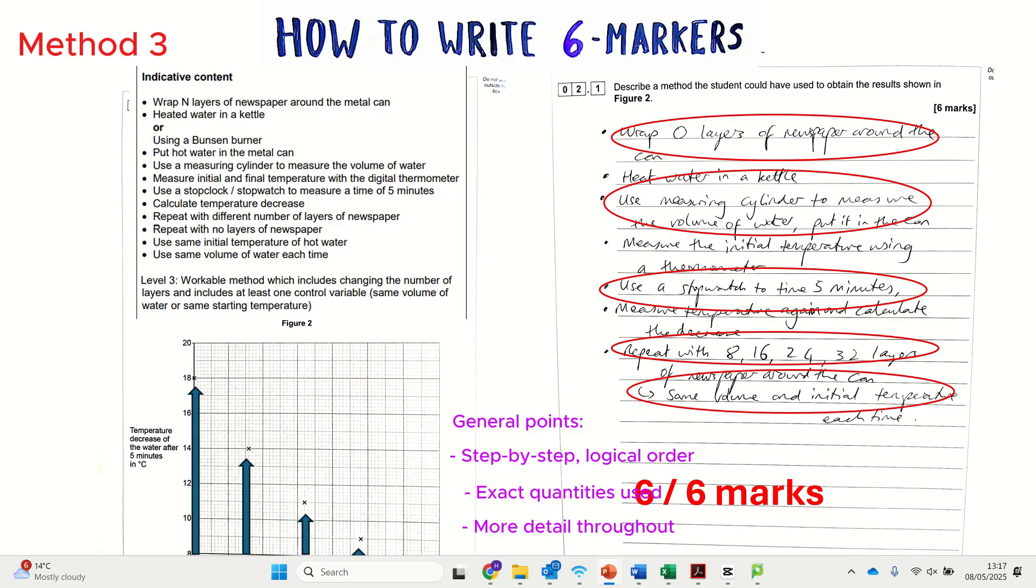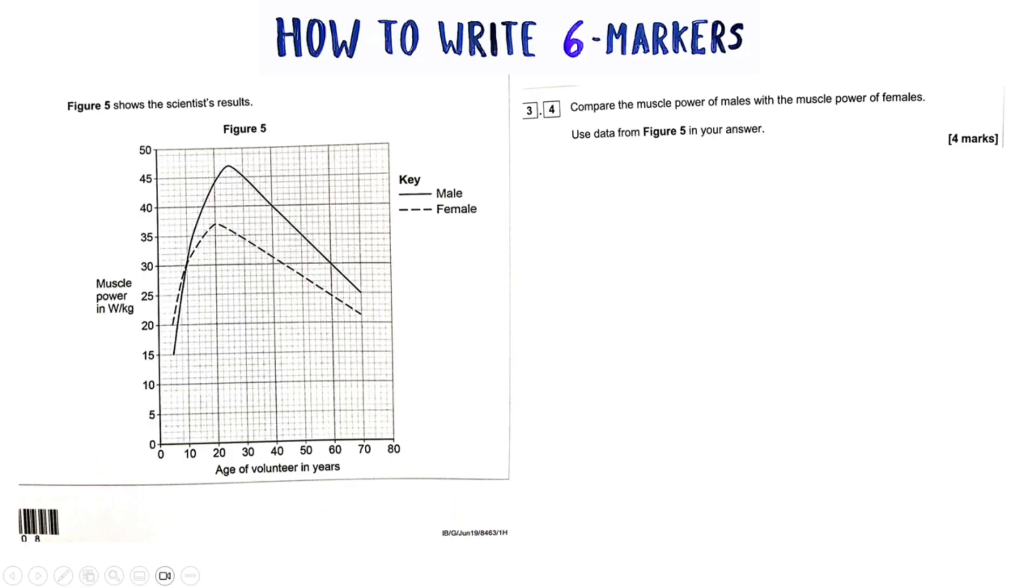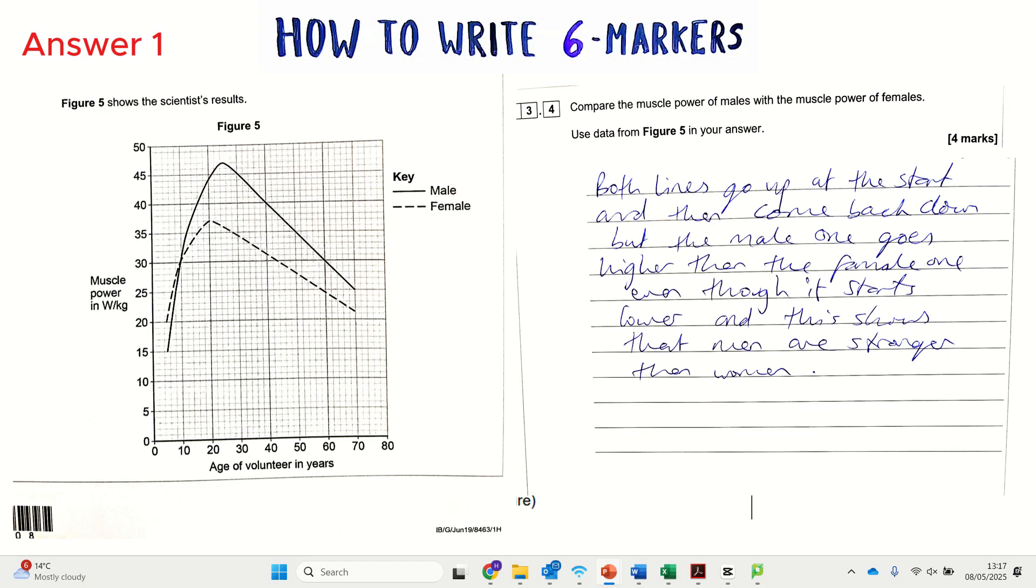This next question we're going to look at is on a physics paper, however it's nothing on the specification, it's just graph analysis. So it could be on a biology paper or chemistry paper. We've got a graph here showing the muscle power of males and females and how it varies over time and over their different ages. The question says to compare the muscle power of males with the muscle power of females. I'm going to show you a good one and a bad one, the bad one first.